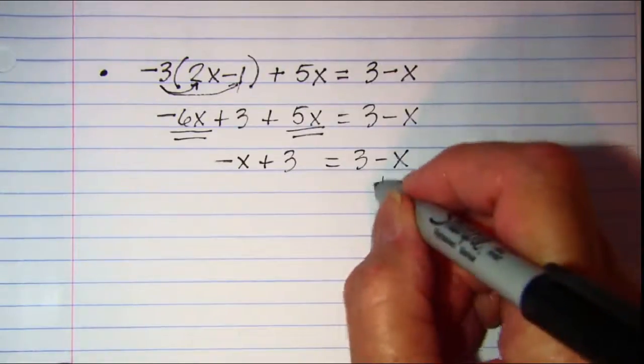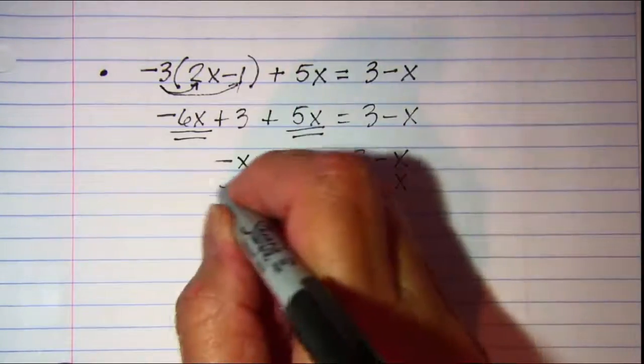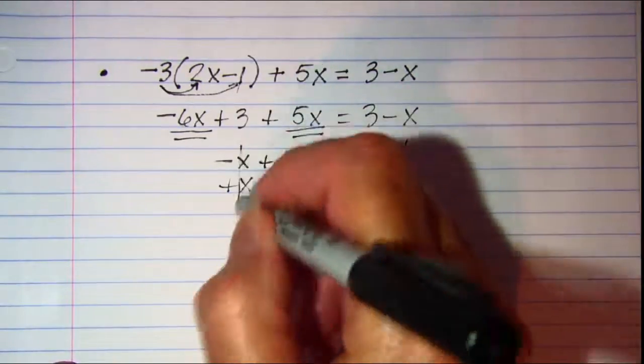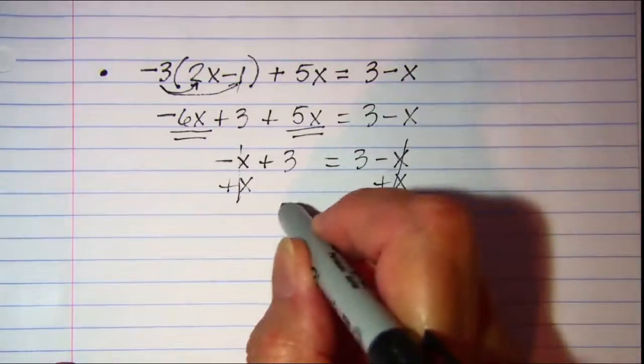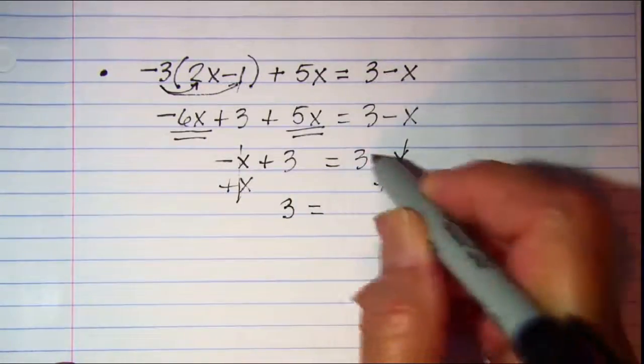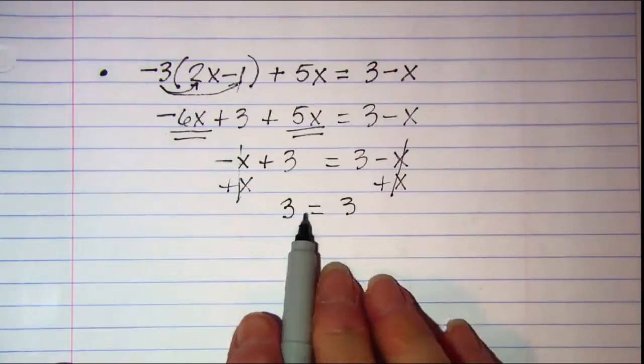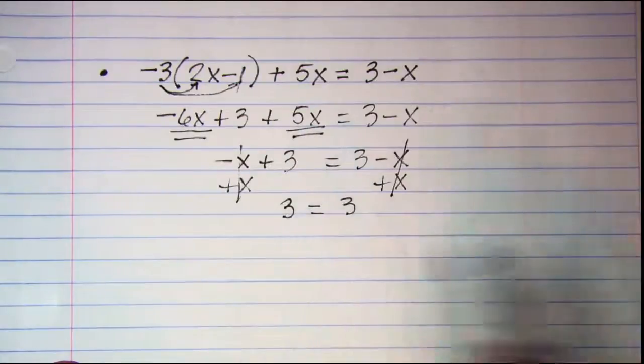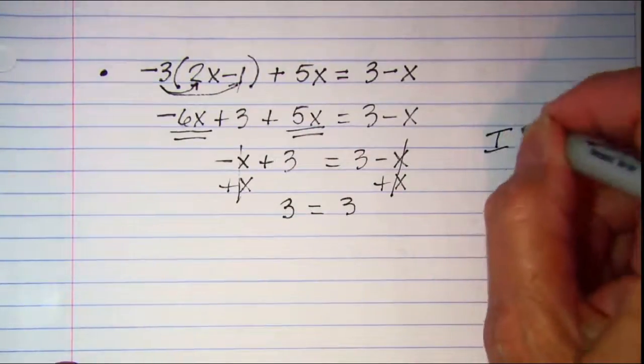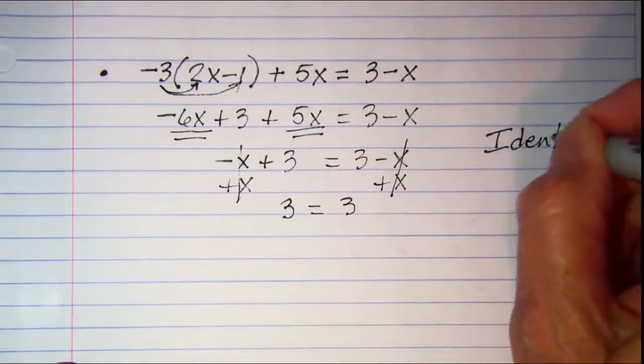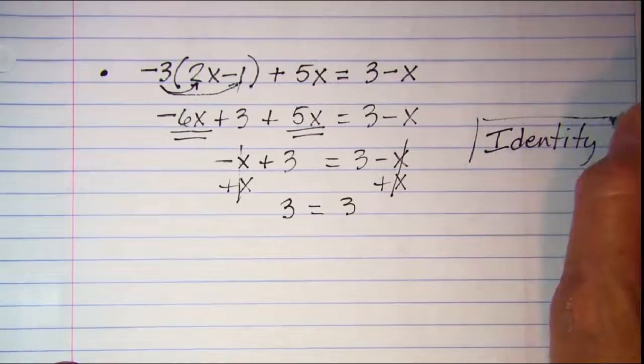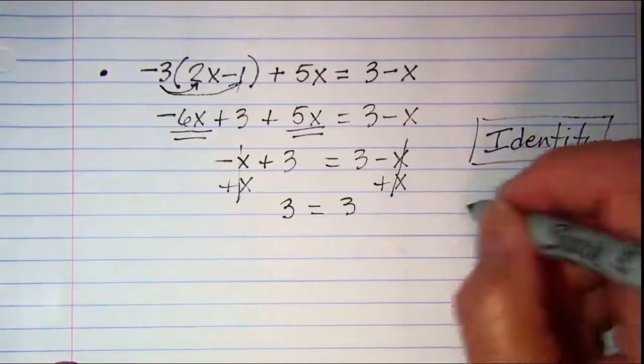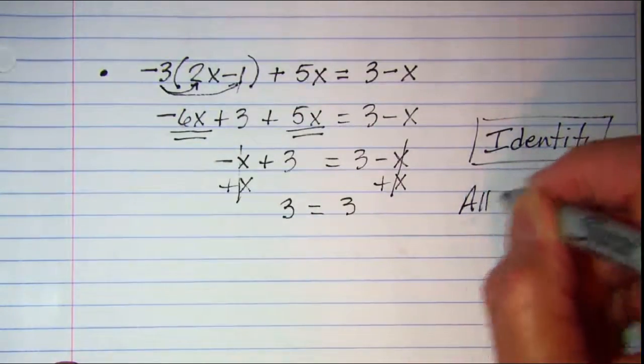We can add x to both sides. We can see that these cancel off, and these cancel off. And I end up with 3 on the left side, and 3 on the right side. Now three is always equal to three, so this equation is an example of an identity, and since this is always true, my solution set is all real numbers.